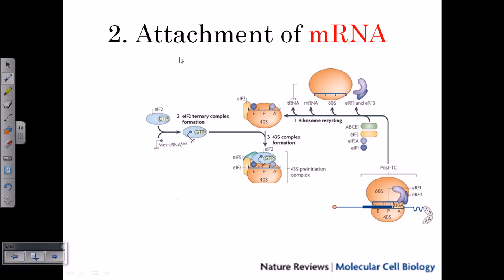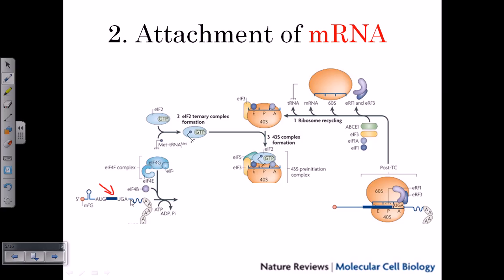The second stage is the attachment of mRNA. The mRNA in eukaryotes has a specific structure: at the 3' end there is a polyadenylyl tail, and at the 5' end there is a methylated guanine cap. The AUG start codon and the stop codon are within the coding sequence. This mRNA must now attach to the 43S pre-initiation complex, and that requires additional proteins.